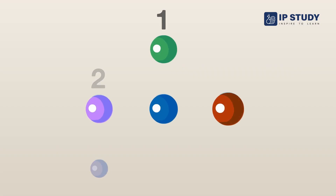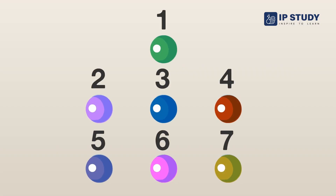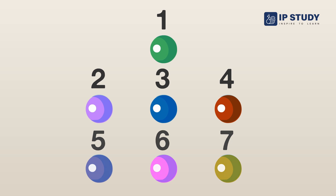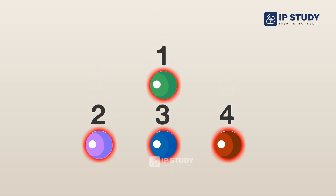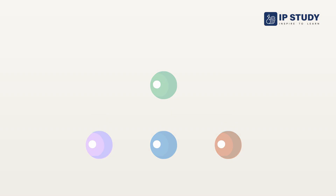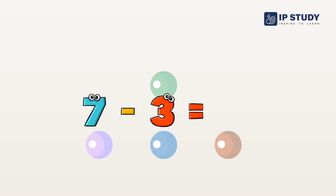I have 7 marbles, of which I have lost 3 marbles. So I have 4 marbles. 7 minus 3 is equal to 4.